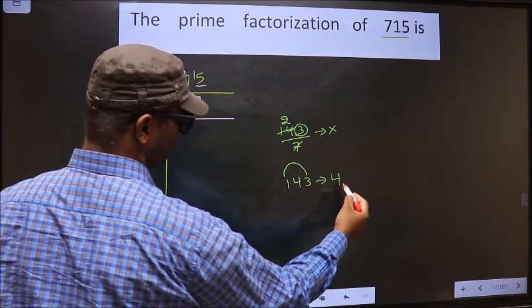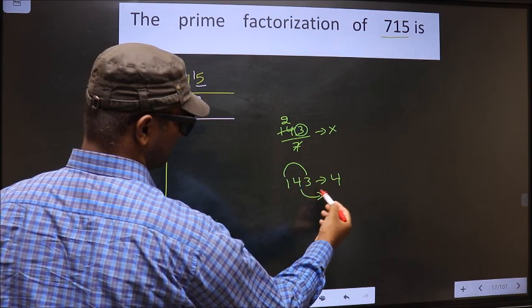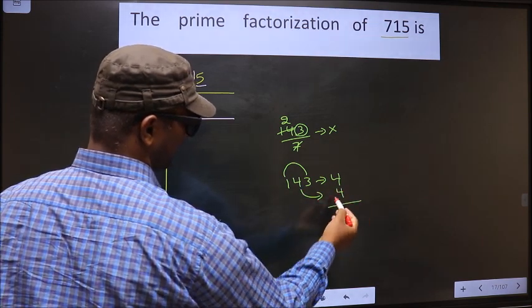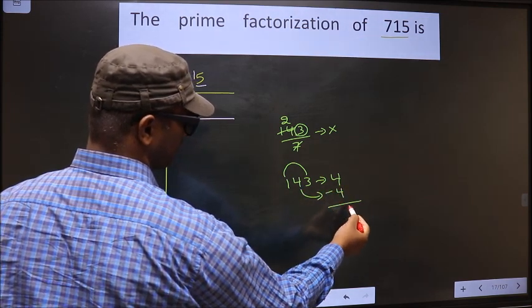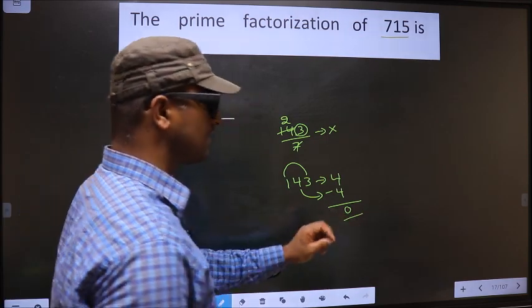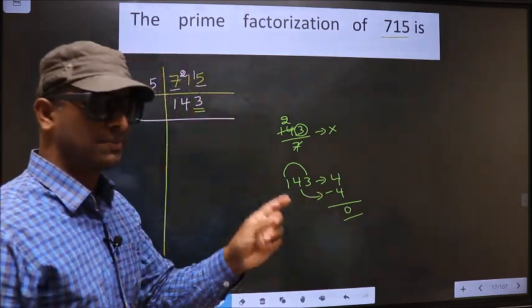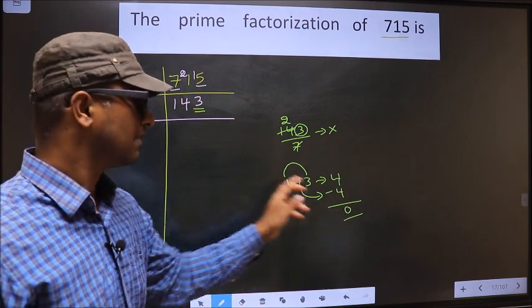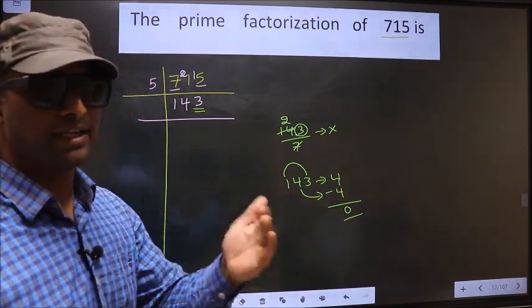So 1+3=4, and the left out number is 4. Now you take the difference: 4-4=0. We got 0. 0 is divisible by 11, so this number is also divisible by 11.